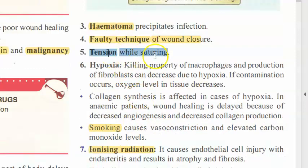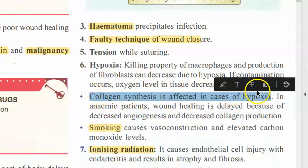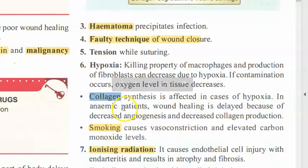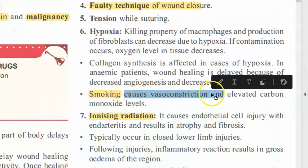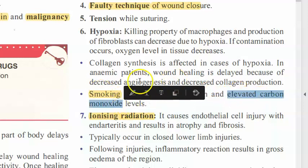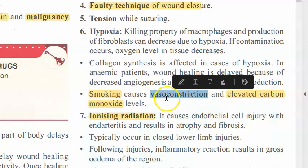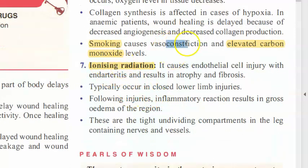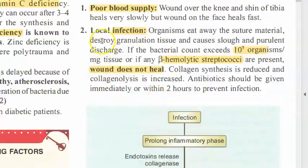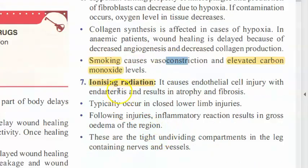Tension while suturing — pulling wound edges too tightly — leads to poor healing. Hypoxia is another factor: oxygen is needed in the proliferative stage for collagen synthesis, as procollagen must be converted to collagen. Smoking causes vasoconstriction and elevated carbon monoxide levels, which reduces blood supply and leads to hypoxia.